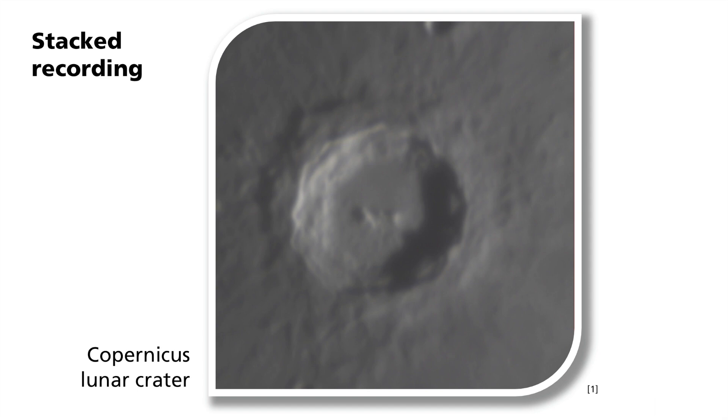Here is a picture of the lunar crater Copernicus. It has a diameter of less than 100 kilometers and can be observed from Earth with just a pair of binoculars.